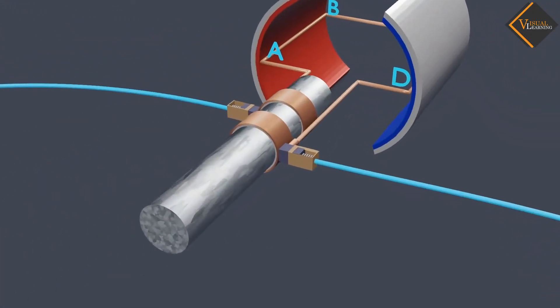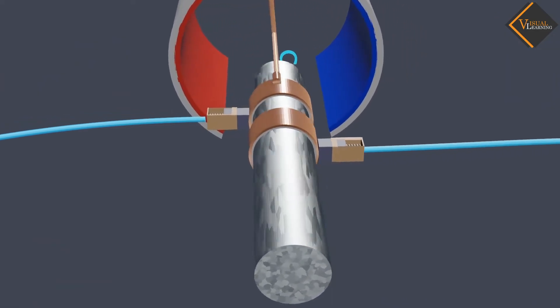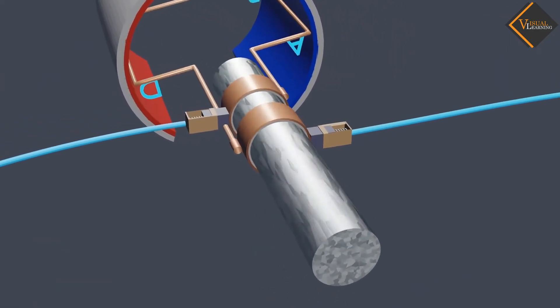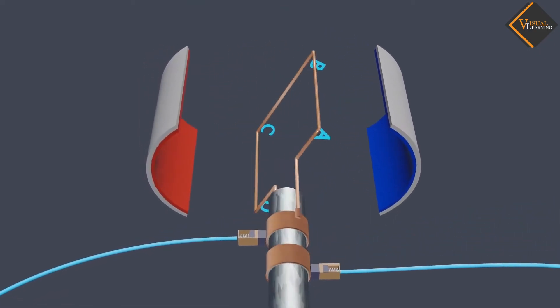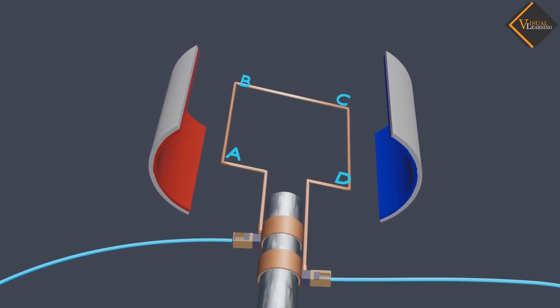When the axle rotates, the two rings attached to the axle also rotate. The rectangular coil is attached to the rings and it also rotates along with the rings.